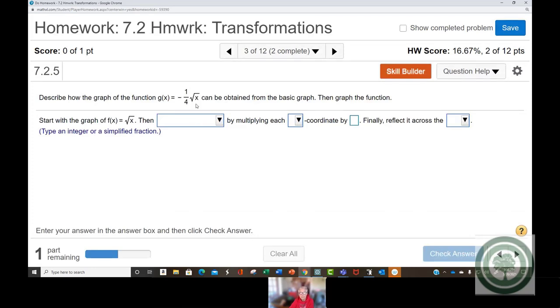Okay. We'll do one more and then move on. Describe how the graph of this function, g of x equals negative one-fourth times the square root of x, can be obtained from the basic graph. And in this problem, they tell you what the basic graph is, kind of nice.